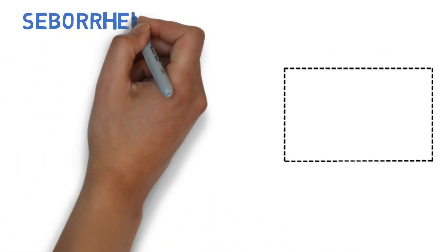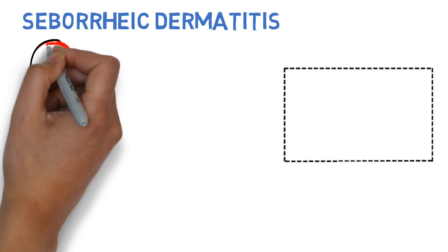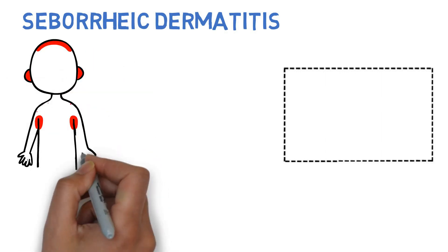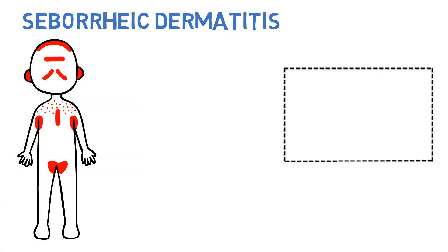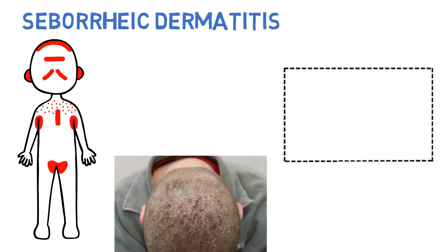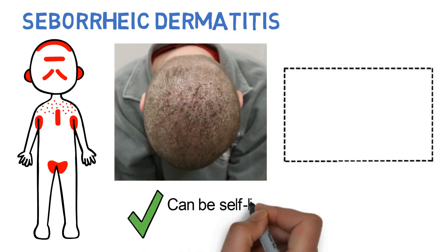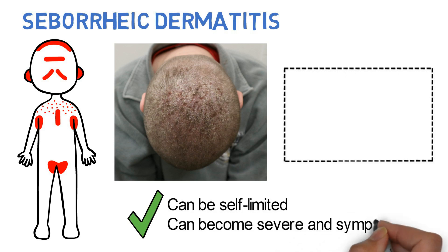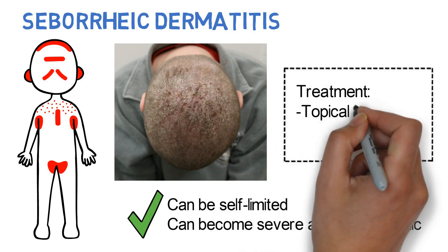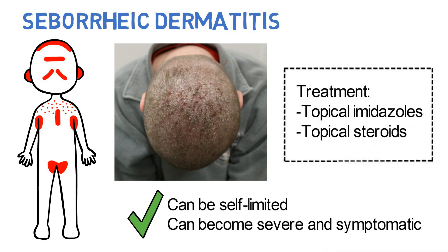Seborrheic dermatitis presents with pruritic erythema in sebaceous gland-rich regions of the body. There may be a greasy yellow scale. It can be self-limited, but at times can become quite severe and symptomatic. Treatment includes topical imidazoles and topical steroids.